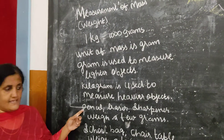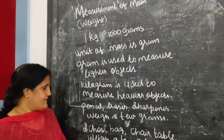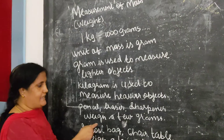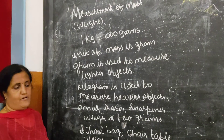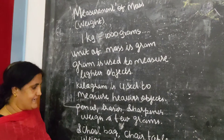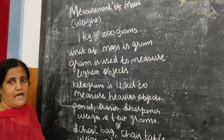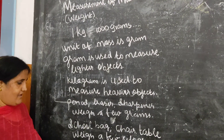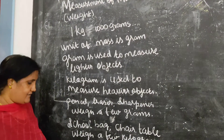Pencil, eraser, and sharpener are examples of objects measured in grams. School bag, chair, and table are examples of objects measured in kilograms.